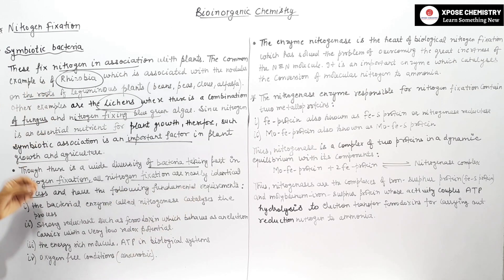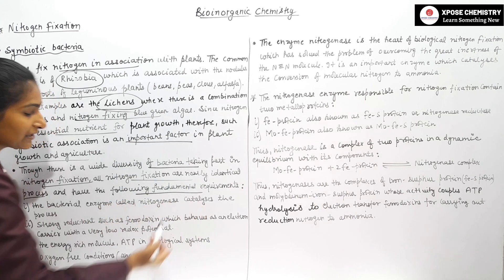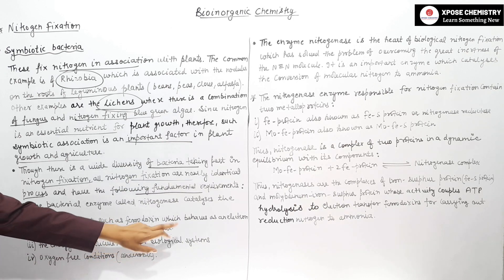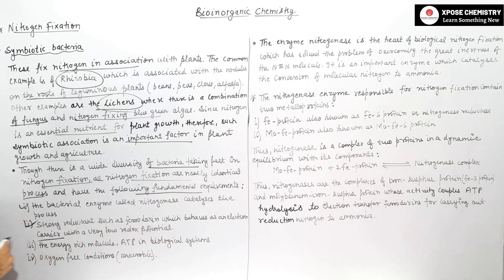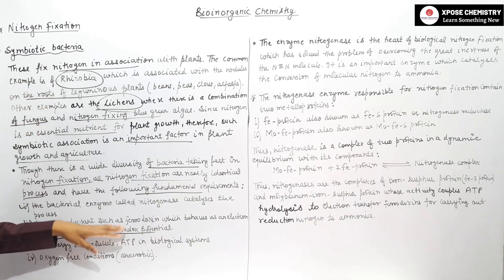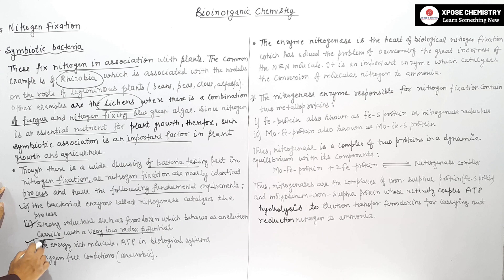The fundamental requirements are: first, bacterial enzyme called nitrogenase catalyzes the process; second, strong reductant such as ferredoxin behaves as an electron carrier with a very low reduction potential; third, energy rich molecule ATP; and fourth, oxygen free anaerobic conditions.